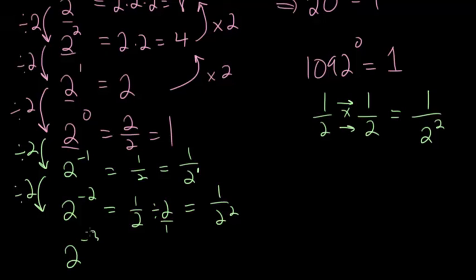And if we look at 2 to the minus 3, we're again going to divide by 2. But what you'll see is that this is simply 1 over 2 to the third power. So basically, if you have a negative exponent, you're just going to put it in the denominator and make it positive.